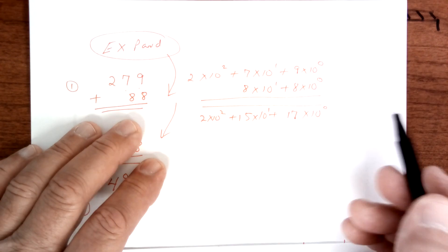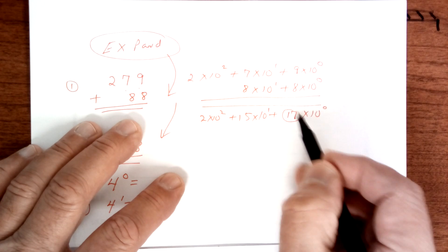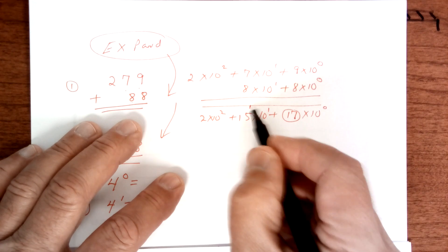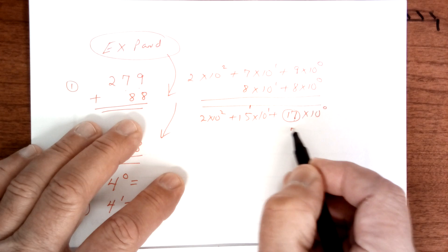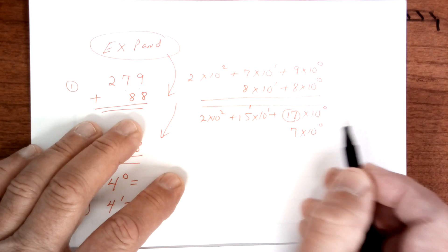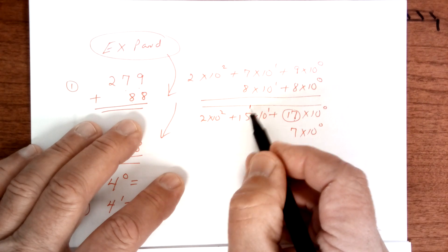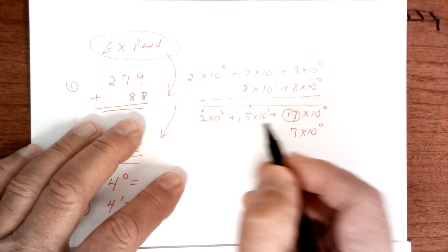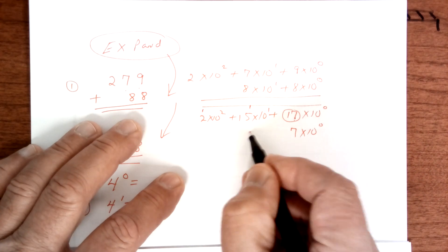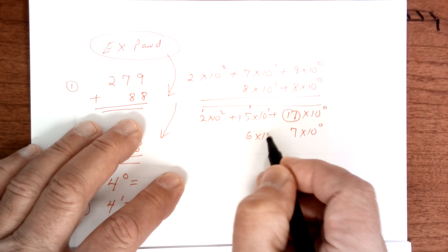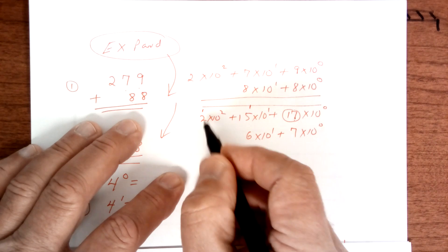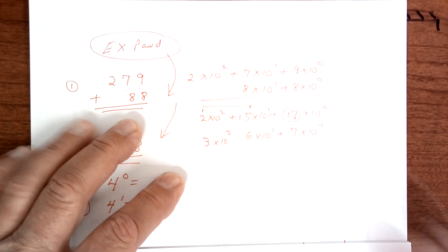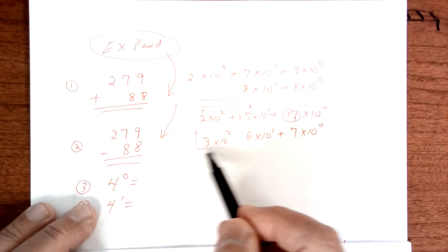However, this one right here is more than 10. So you're going to add one here and you're going to make this 7 times 10 to the zero power. This right here is 16 and that's more than 10, so you're going to add one here and that's going to be 6 times 10 to the first power. And then here you're going to get 3 times 10 to the second power. And this is your answer right here when you add it.